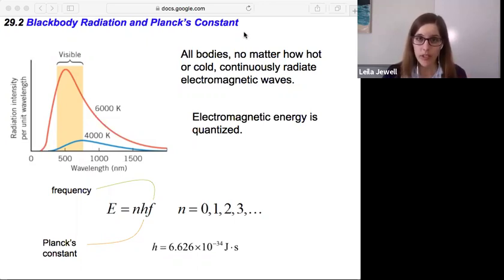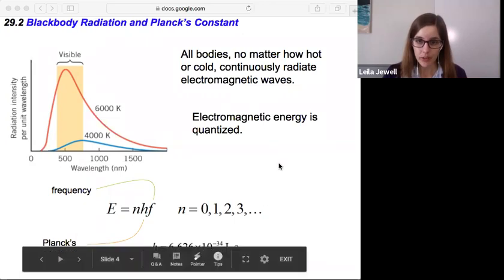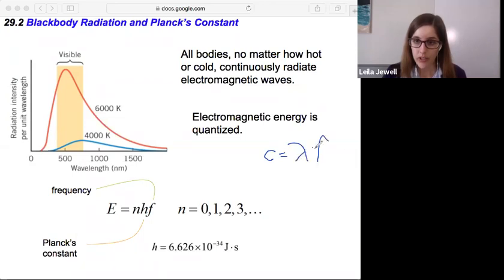Right? If it's the speed of light, then we know that the speed of light c is equal to the wavelength times the frequency. So that's a handy relationship here.